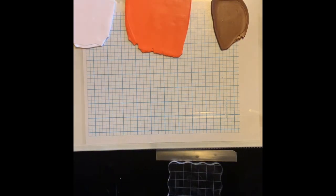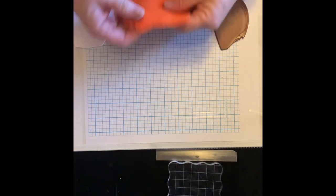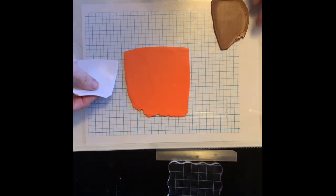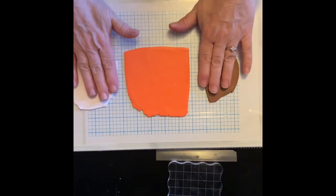Hi everyone, it's Angie. Today I'm going to do a rose cane. And I want it mainly orange, and a little bit of white and brown on each side.